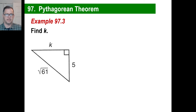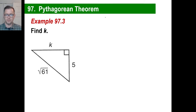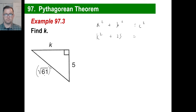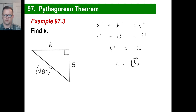Here's another one — find K. You might look at this and go, oh, this is weird looking, but don't change the formula, just use it again. All we care about is making sure C is the hypotenuse. So K squared plus five squared, which is 25, equals — well, what is the square root of 61 times the square root of 61? It's just 61. So K squared equals 61 minus 25, which is 36. K is the square root of 36, so K is six.